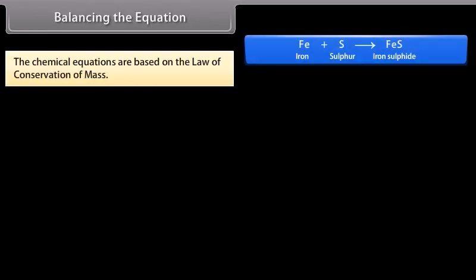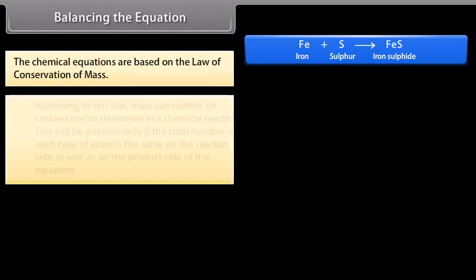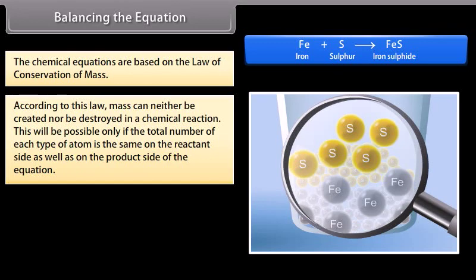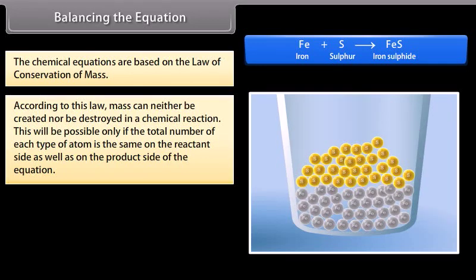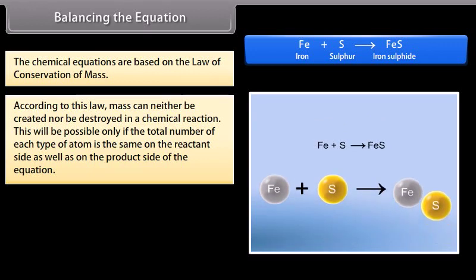The chemical equations are based on the law of conservation of mass. According to this law, mass can neither be created nor be destroyed in a chemical reaction. This will be possible only if the total number of each type of atom is the same on the reactant side as well as on the product side of the equation.